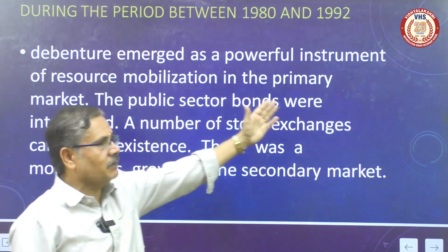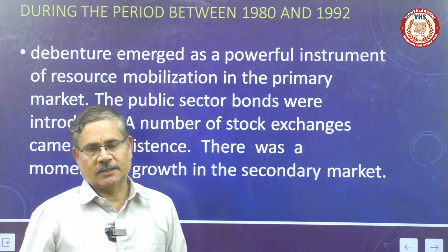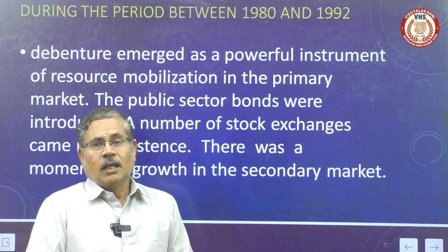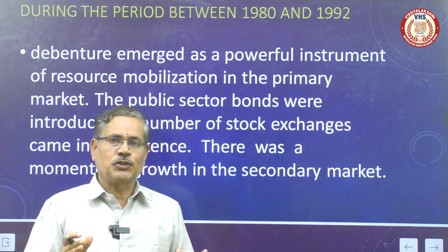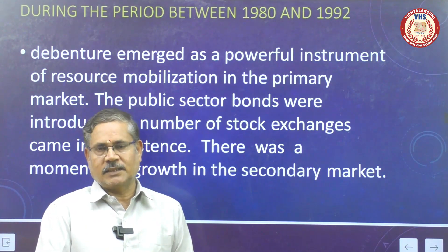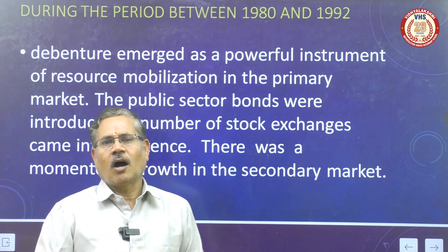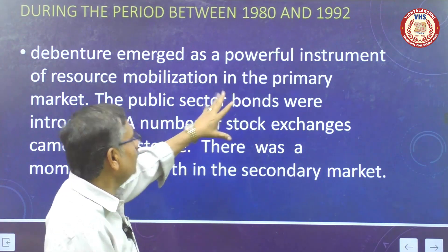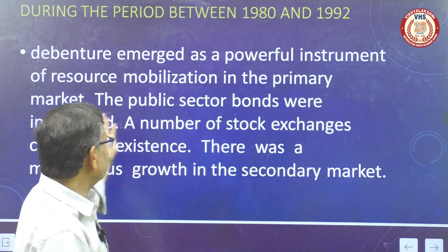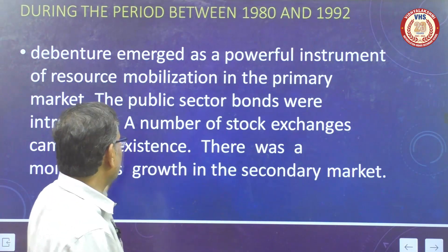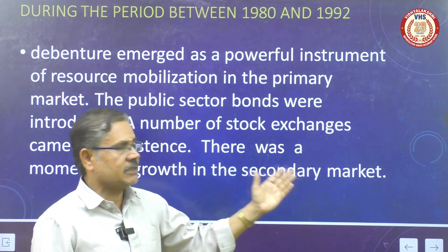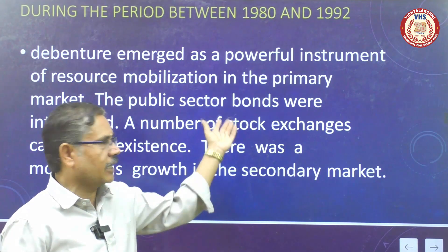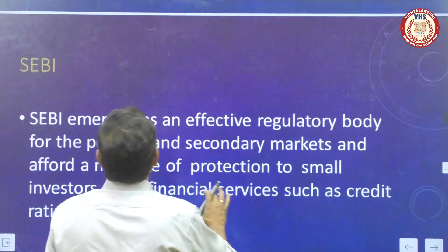After this period, debentures emerged as an instrument. What is meant by debentures? Debentures means acknowledgement of debt. The company owners hand over property documents to the financial institution, and based on those documents, they borrow loans from financial, commercial, or industrial institutions. That loan instrument is called a debenture. It is a powerful instrument for the mobilization of funds, creating public sector bonds. Then they introduced membership of stock exchanges and created the existence of a secondary market for the resale of shares and debentures.